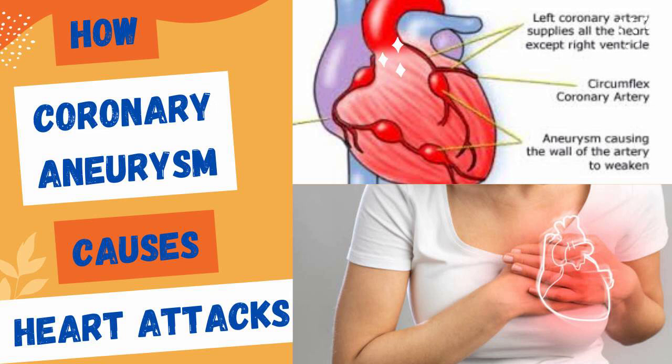4. Ischemia and Tissue Damage. When the blood flow to the heart muscle is compromised due to coronary anomalies or aneurysms, the affected area of the heart may not receive enough oxygen and nutrients. This leads to ischemia, a condition where the heart muscle is deprived of adequate blood supply. Prolonged ischemia can cause irreversible damage to the heart tissue, resulting in myocardial infarction.